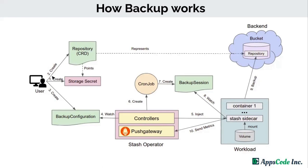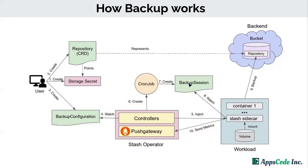After that, the user creates a backup configuration. The backup configuration tells Stash what to backup and how often the backup will be performed. The Stash controller watches for backup configuration resources. When it sees a backup configuration, it immediately injects a Stash sidecar into the target workload. The Stash controller also creates a cron job that periodically triggers a backup. When a backup schedule appears, it creates a backup session.